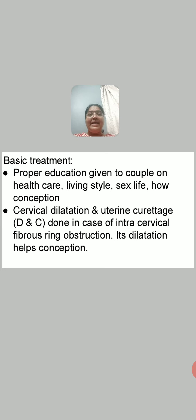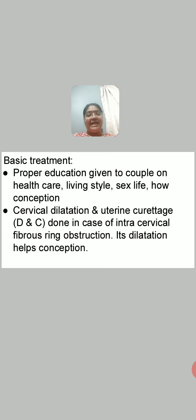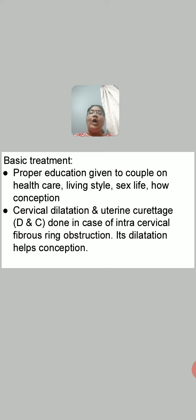Educate the woman regarding sex life. Sometimes the method of coitus is not known, so you can guide her regarding it. Explain the fertile period, because there are maximum chances of conception during this fertile period. Instruct her to have coitus every day or at least every alternate day during the fertile period to achieve conception. Advice covers health care, lifestyle, and sexual life.